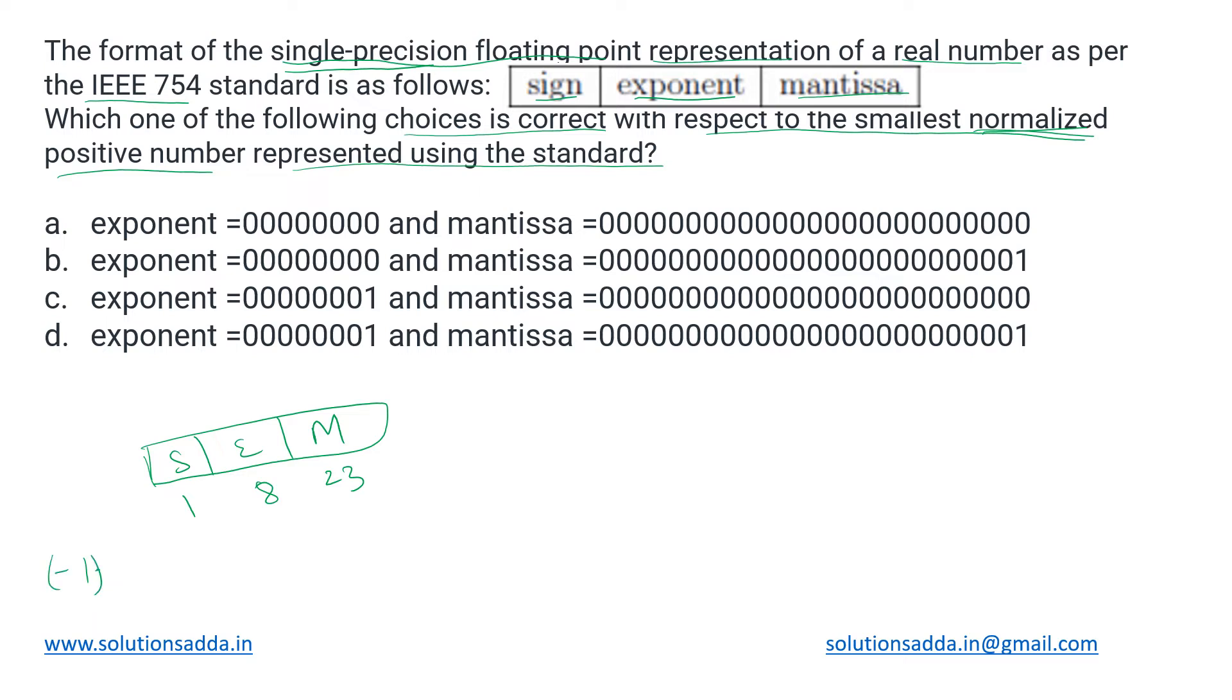It's like minus 1 raised to the sign bit, then 1.mantissa means whatever bits are there in the mantissa we place them over here, then we do 2 to the power of exponent minus the bias. The bias we generally go for is 127.